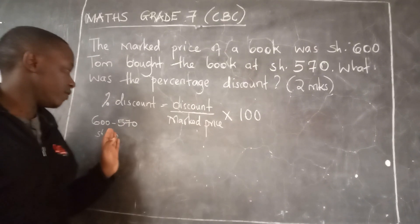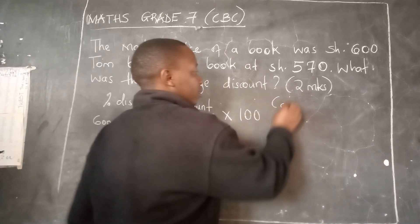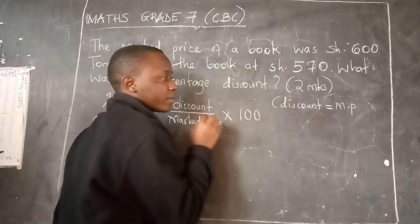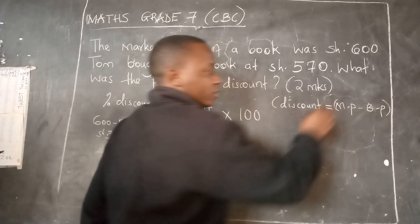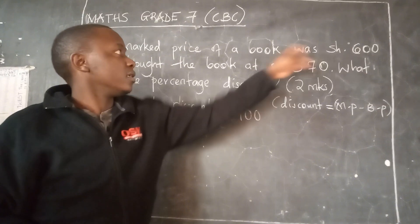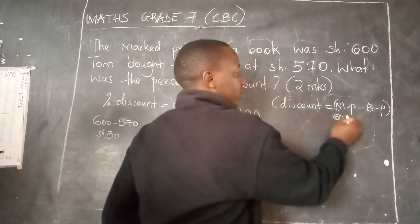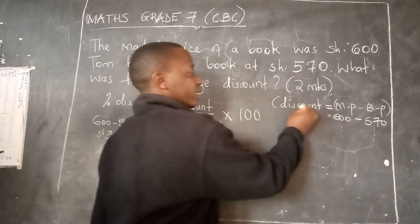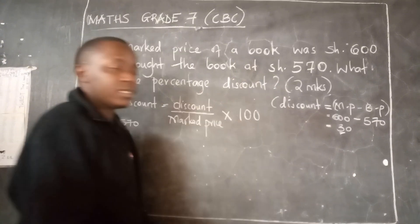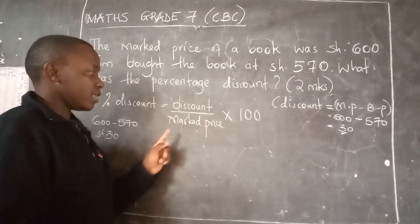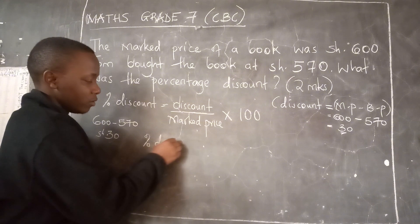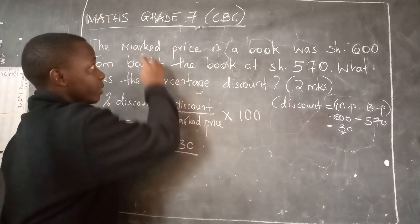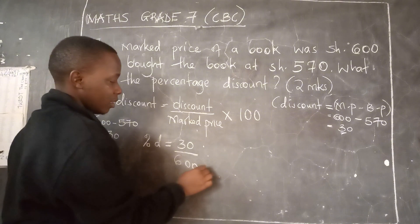The discount is given by the marked price minus the buying price — the price at which the book was bought. The marked price is 600, so it is 600 minus the buying price of 570, which gives a discount of 30 shillings. Now, the percentage discount is equal to the discount of 30 over the marked price of 600, multiplied by 100.